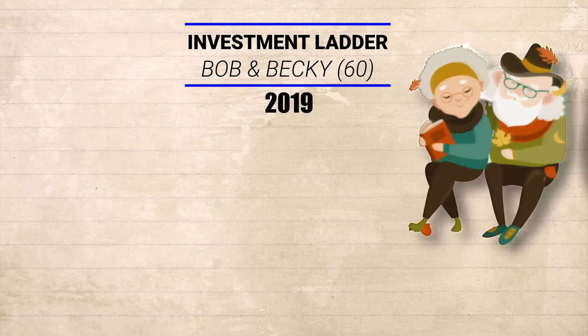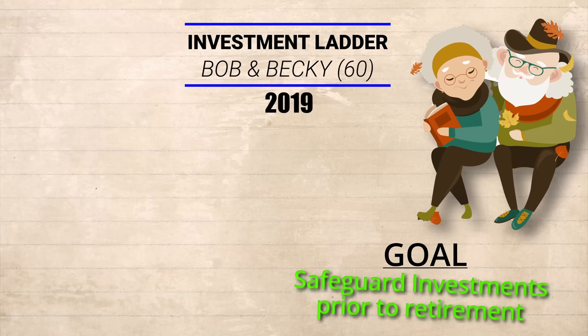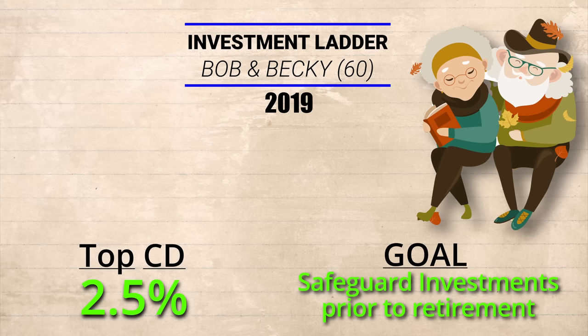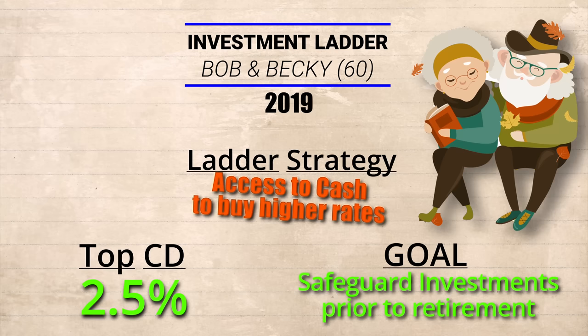Now that I've covered what an investment ladder is and compared all the different rates by time period for fixed assets, I'm going to go over two different examples on how and why a person may want an investment ladder. In my first example, let's assume it's 2019 where we have Bob and Becky — married, both 60 years old, both still working full time. Bob and Becky are trying to safeguard their investments outside of their IRAs and have started to shift 35% of their portfolio to fixed assets. At that time, rates on CDs and treasuries were pretty low at around 2.5%, but they didn't want to lock up 35% of their portfolio for several years because the rates might go up.